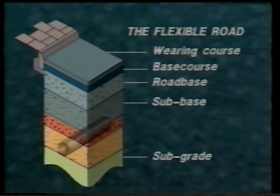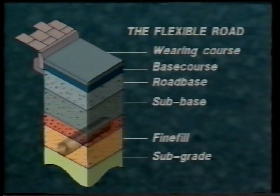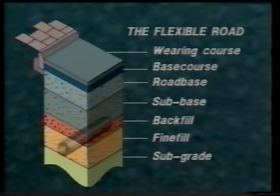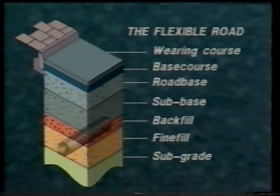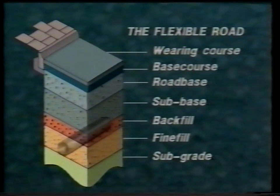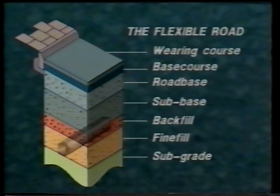The reinstatement differs from the undisturbed structure and consists of two additional layers — fine fill and back fill — which lie between the sub base and subgrade material. The fine fill layer lies at the bottom above the subgrade material and is the layer of protective material which surrounds and protects the utility apparatus. The fine fill also forms the foundation on which to build the rest of the reinstatement.